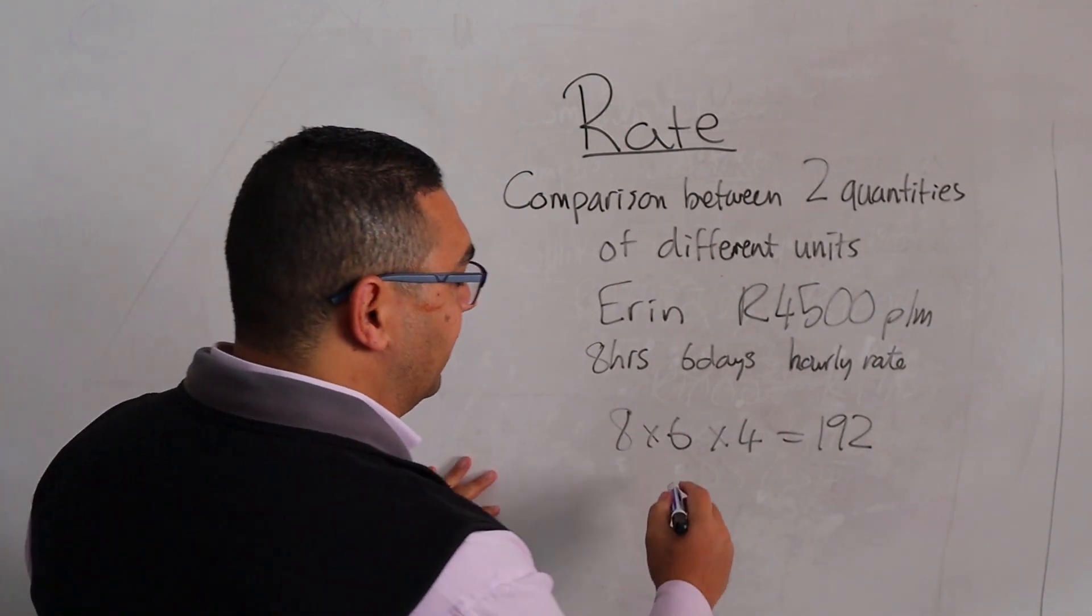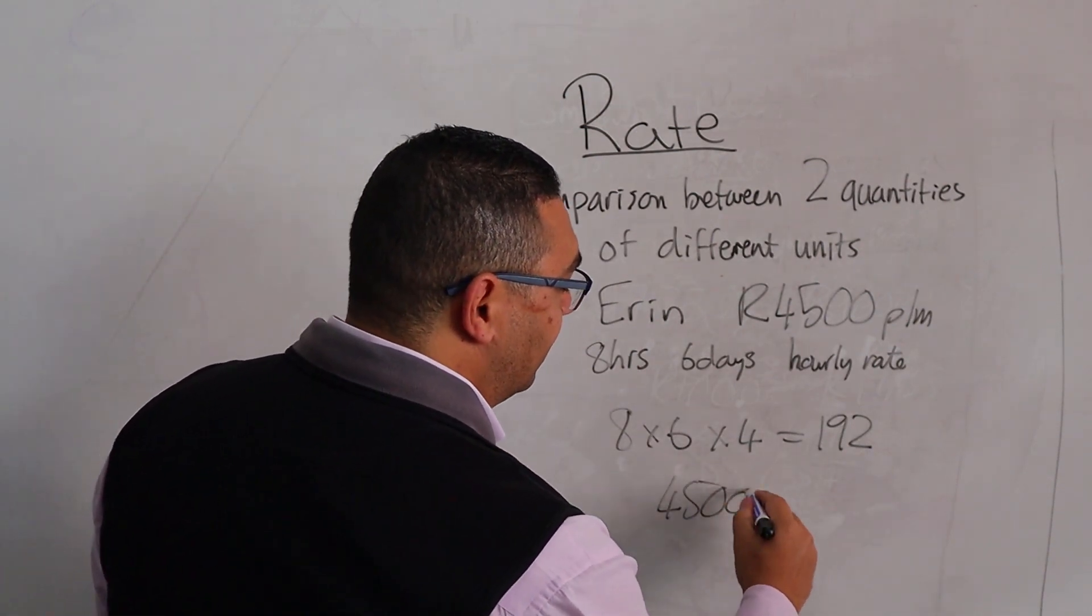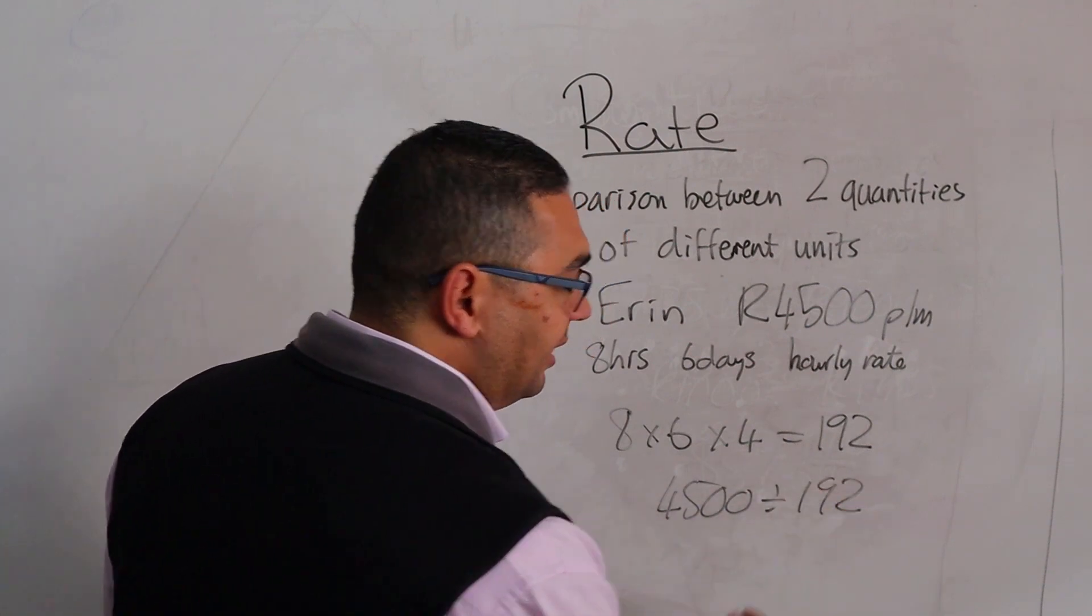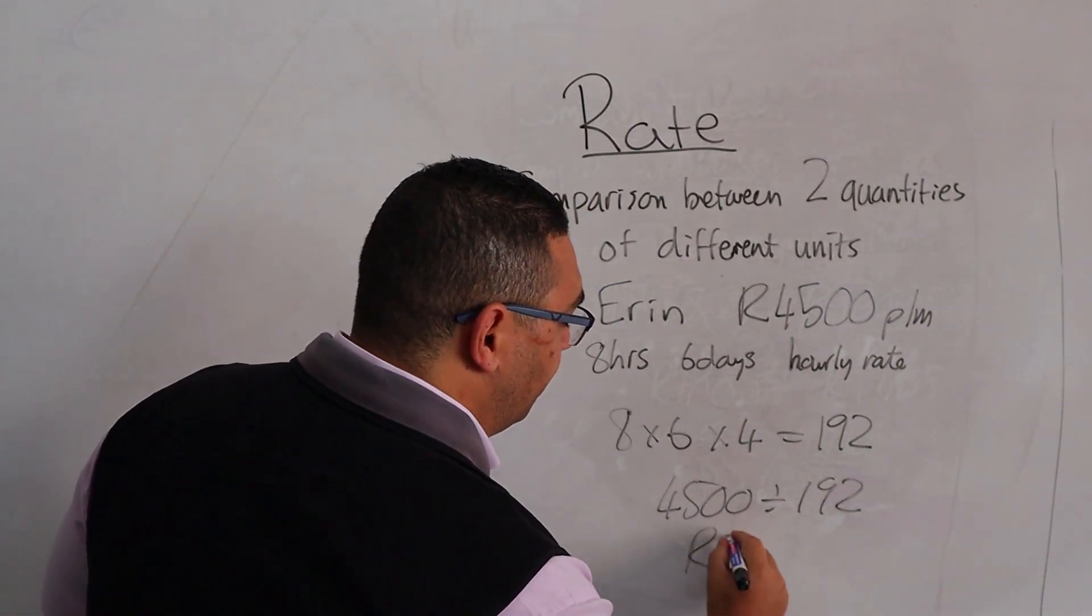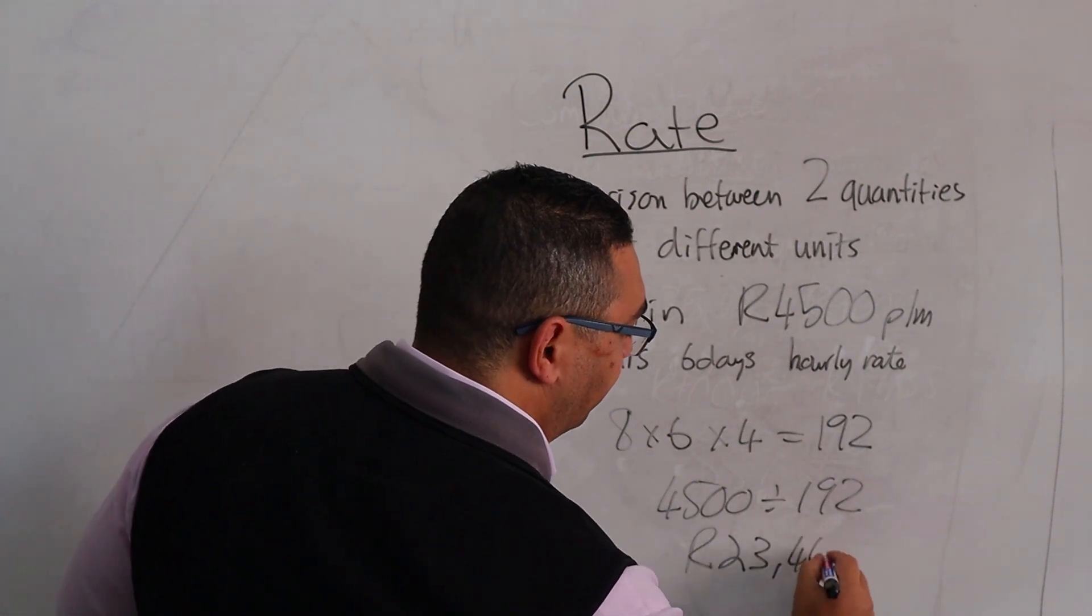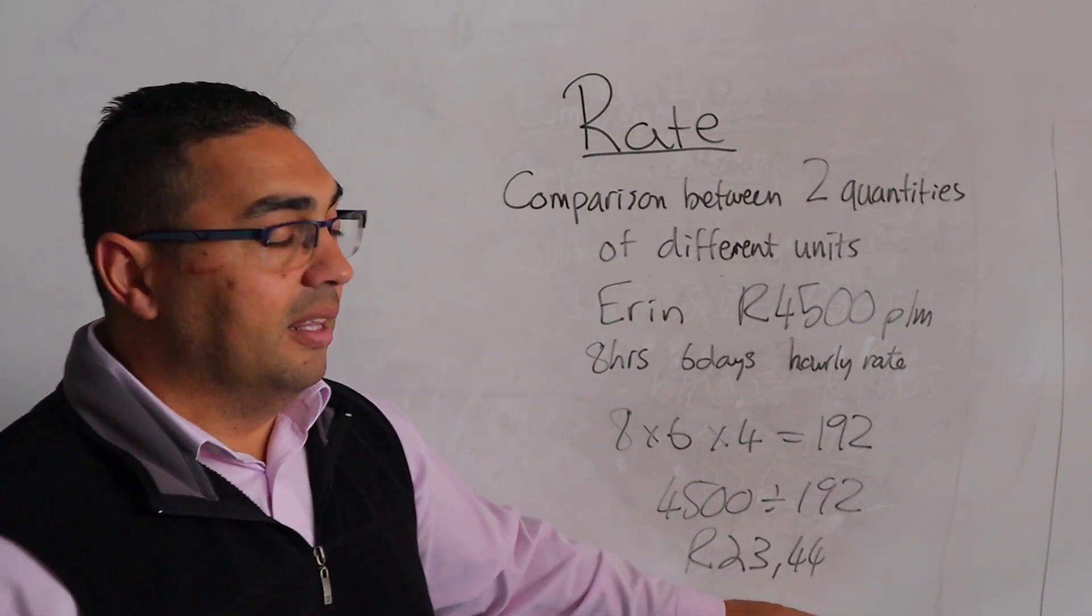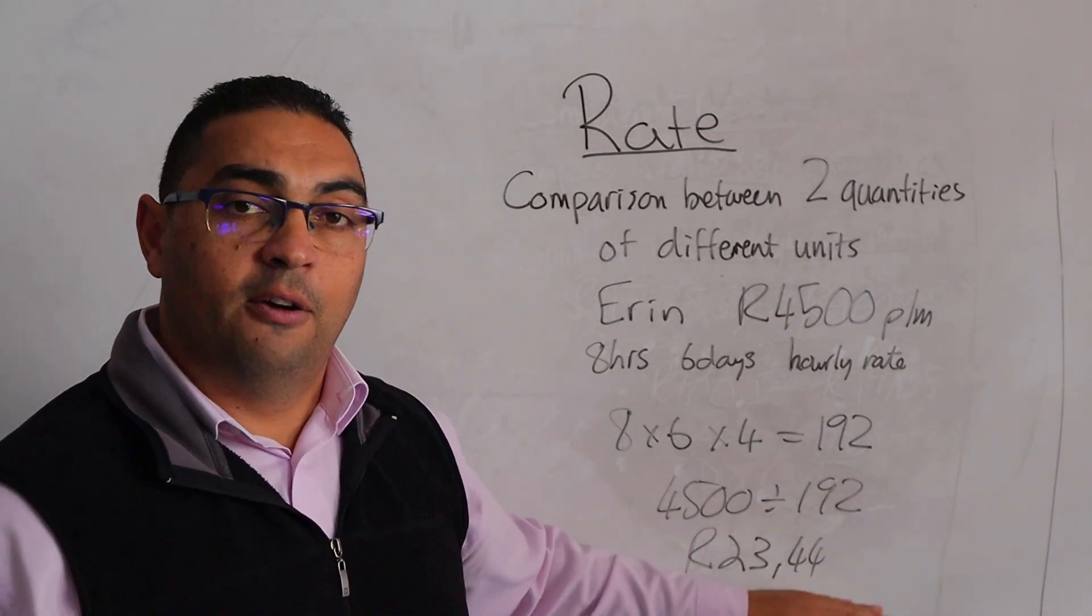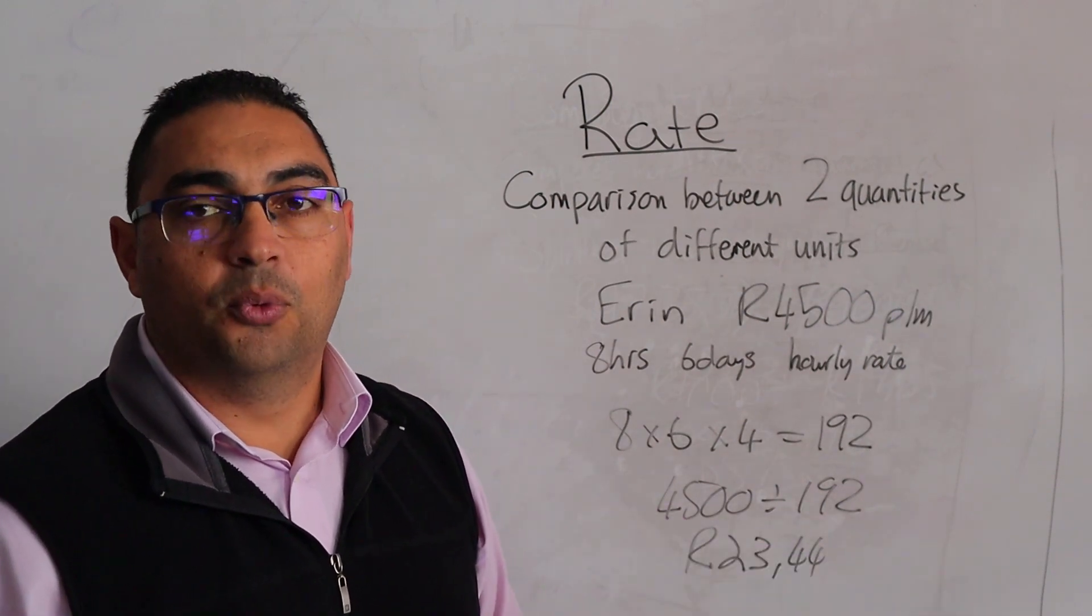What do we now need to do? We're simply going to take our 4,500, divide that by 192, and we end up with 23 rand 44. That's what she's actually earning for every single hour worked.